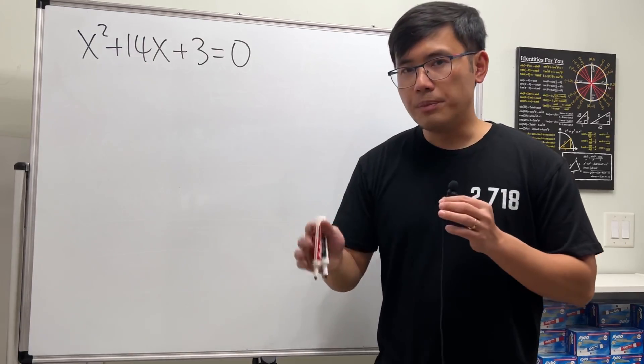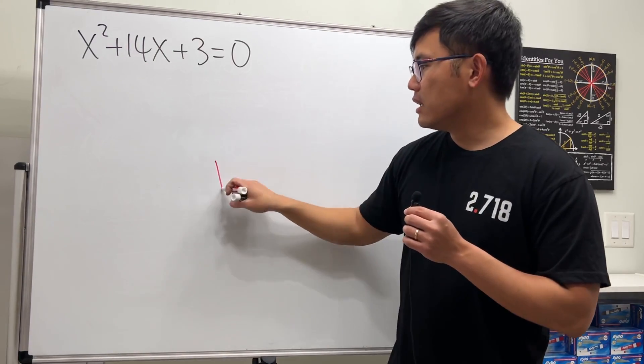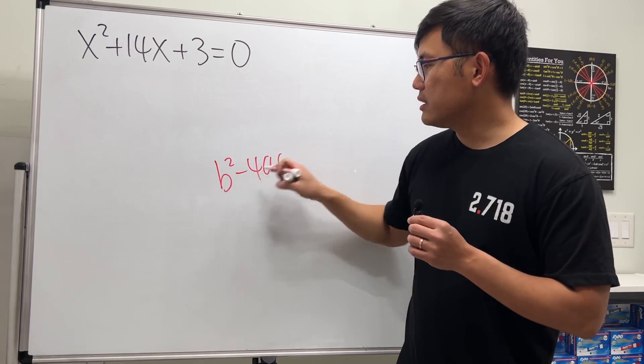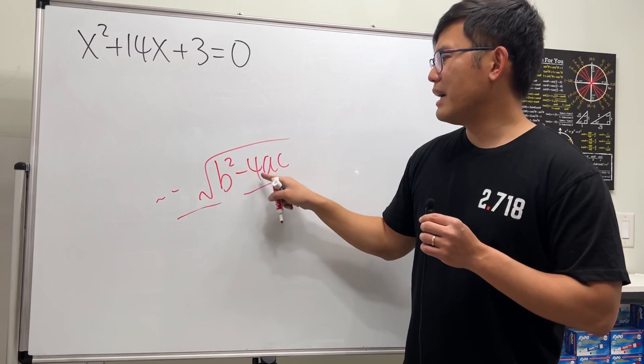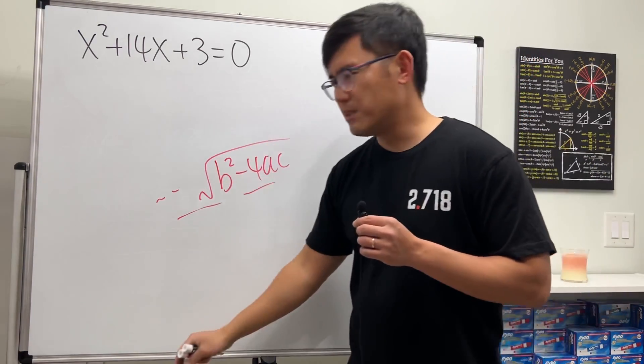Remember, the quadratic formula requires us to compute b squared minus 4ac under the square root. You see, 14 squared minus 4 times 1 times 3, and then we still have to simplify the square root.